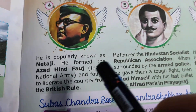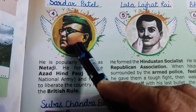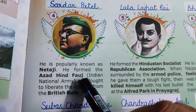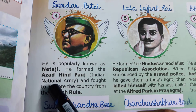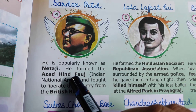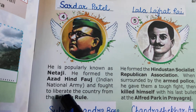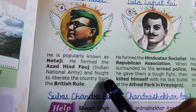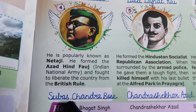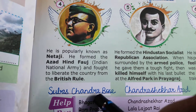Moving on to the fourth one. He is popularly known as Netaji. He formed the Azad Hind Force, also known as the Indian National Army. He fought a lot to liberate — that is, to free — our country from British rule, and he made his own army for that purpose. This great leader is known as Subhas Chandra Bose. We all know that he is supposed to have died in a plane crash.